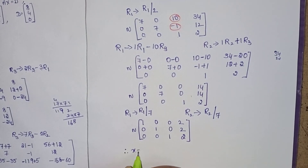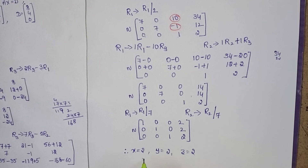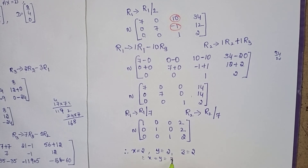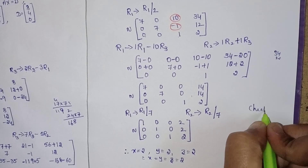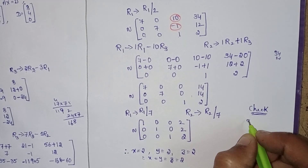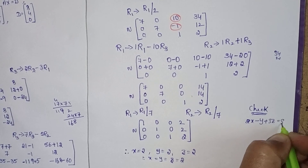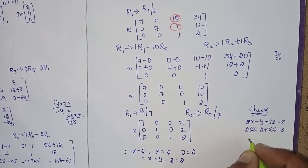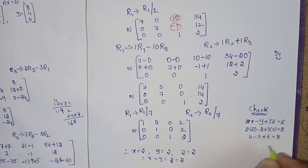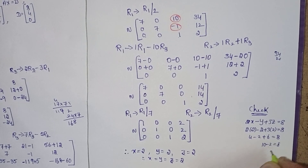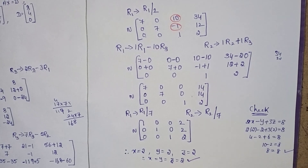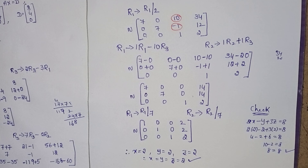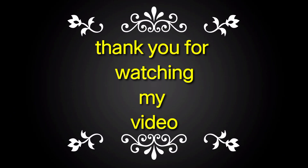Therefore, the required solutions are: x equal to 2, y equal to 2, z equal to 2 — that means x equal to y equal to z equal to 2. Check: 2x minus y plus 3z equal to 8 → 2 into 2 minus 2 plus 3 into 2 equal to 8 → 4 minus 2 plus 6 equal to 8 → 10 minus 2 equal to 8 → 8 equal to 8. LHS equal to RHS, so our answer is correct. Thank you for watching my video. Take care.